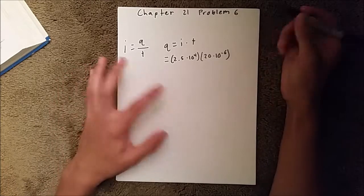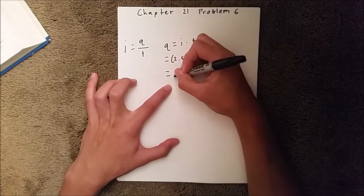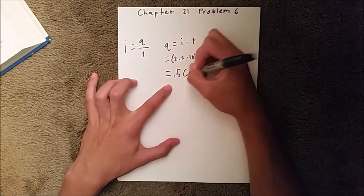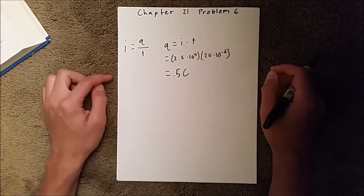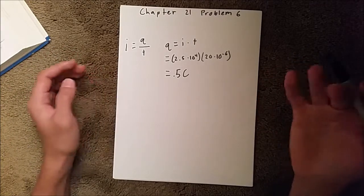and when we multiply those together, you should get half of a coulomb, or 0.5 coulombs, so that's it for this video.